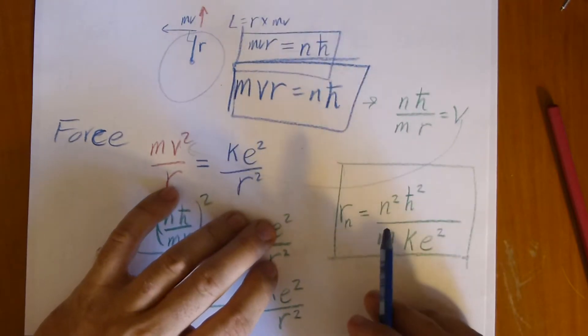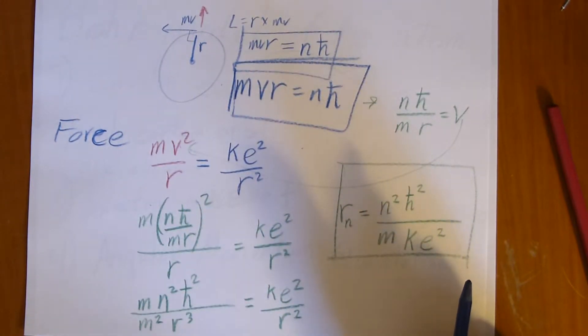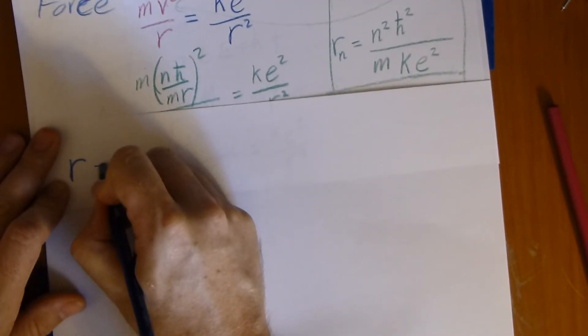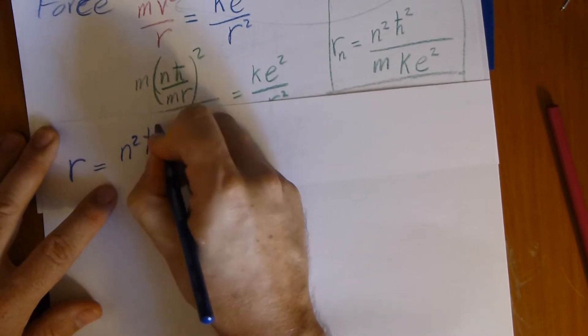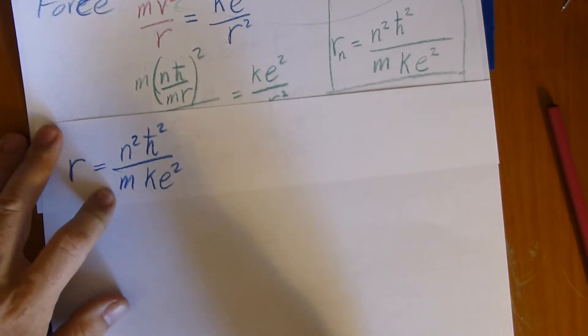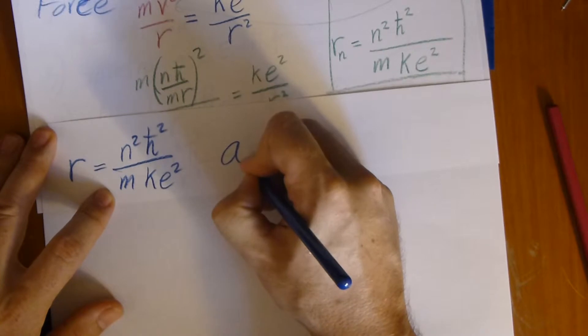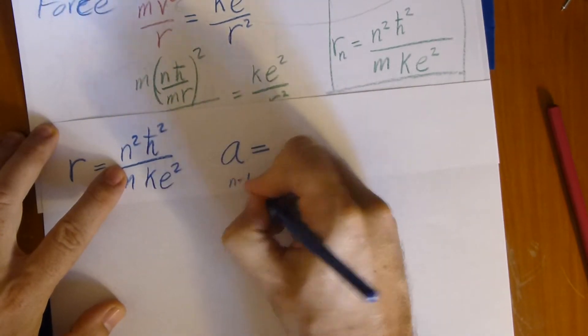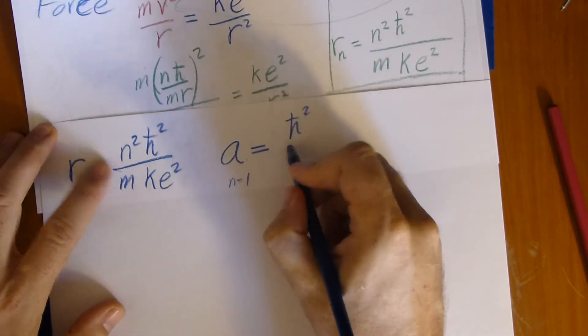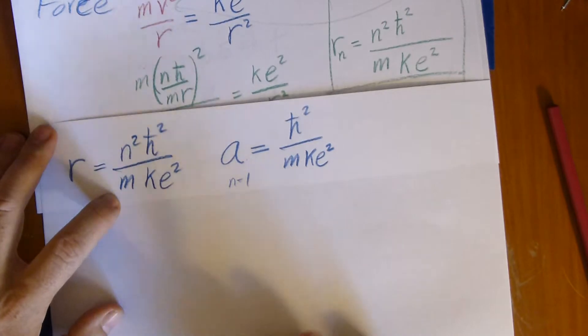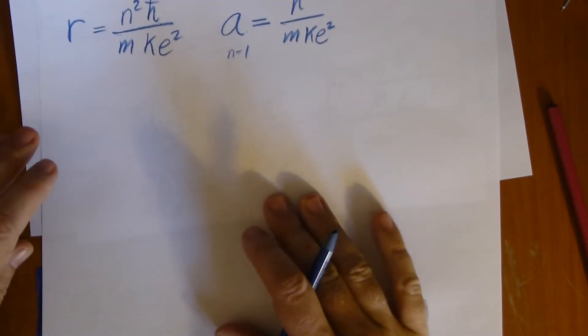Now, let's calculate the energy. Now that we have the radius, let's copy that down. So we have that. R equals N squared H bar squared over M K E squared. Just so you have it, the Bohr radius is N equals 1. So we have H bar squared over M K E squared.